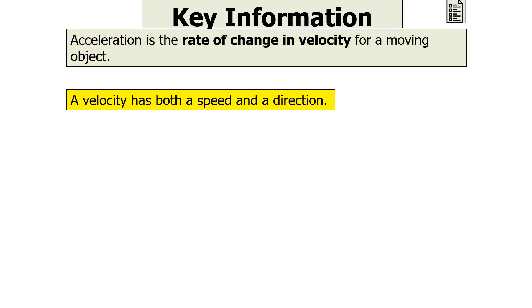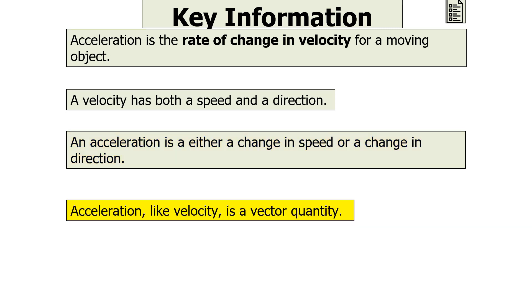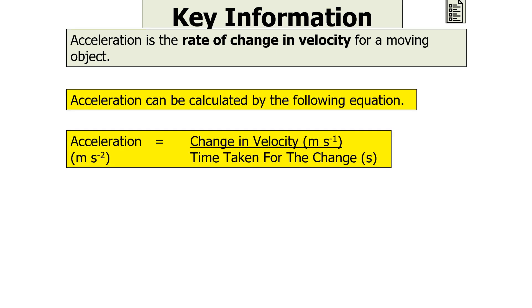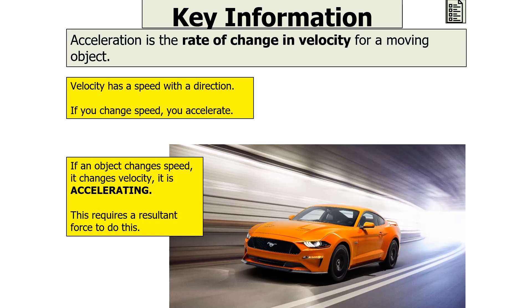Acceleration is the rate of change in velocity for a moving object. Since velocity has both a speed and a direction, an acceleration is either a change in speed or a change in direction. Like velocity, acceleration is a vector quantity. We calculate acceleration as: acceleration in metres per second squared equals the change in velocity in metres per second over the time taken in seconds, which is the final velocity minus the initial velocity over the time taken. If an object changes speed, it changes velocity and is therefore accelerating, which requires a resultant force.